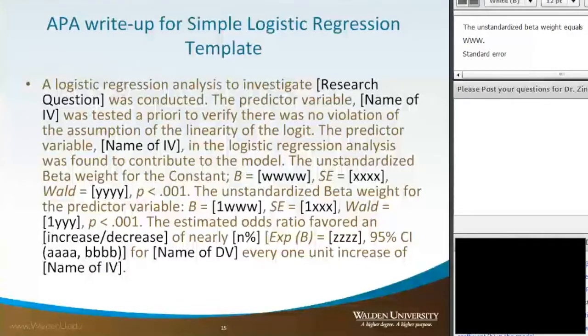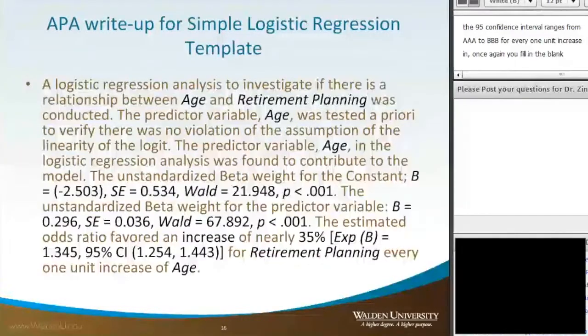The Wald equals YYY, P was less than .001. The estimated odds ratio favored either a positive or inverse relationship of nearly n-fold, where the exponentiated beta equals ZZZZ. The 95% confidence interval ranges from AAA to BBB for every one unit increase in your variable.